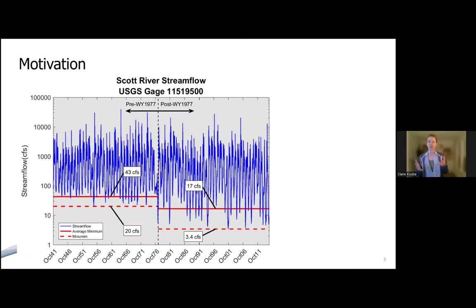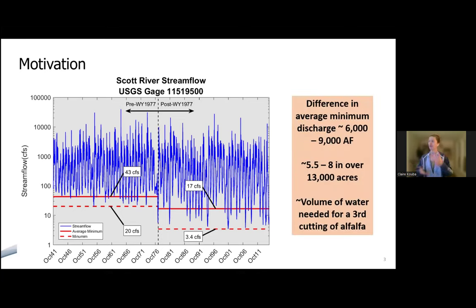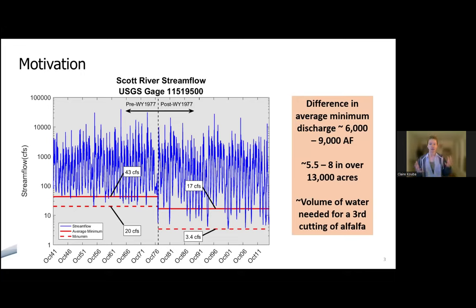The motivations for developing the Scott Valley Integrated Hydrologic Model — SWIM — were changes in hydrologic regime and broadly water use in the Scott Valley. The difference in average minimum flow between the post-1970s and pre-1970s is roughly the amount of water needed for a third cutting of alfalfa. In the 1970s, increased irrigation efficiency measures led to expanded use of groundwater and the ability to harvest a third alfalfa cutting. This also coincided with other external factors like changing climate and changing vegetation types in the uplands.